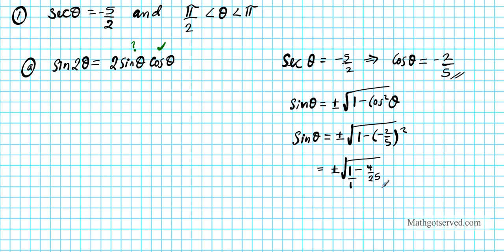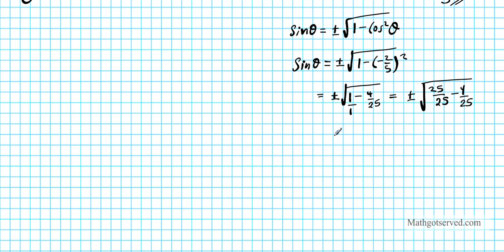Writing 1 as a fraction 1 over 1, we find the LCD by multiplying by 25 top and bottom. So we have plus or minus the square root of 25 over 25 minus 4 over 25. Subtracting the numerators while keeping the denominator fixed, we get plus or minus the square root of 21 over 25. Splitting the radical gives us plus or minus root 21 over 5. So the question is: is sine positive or negative?